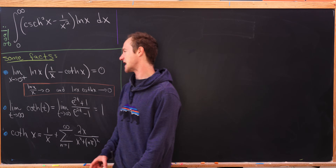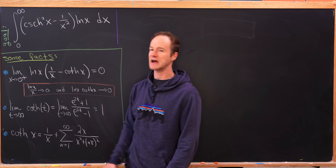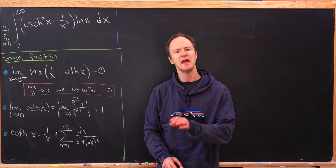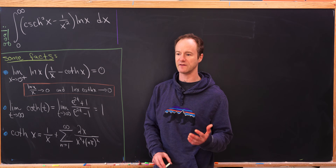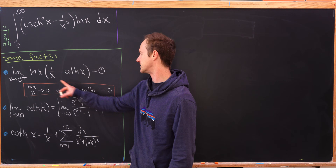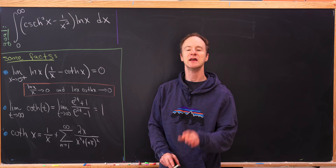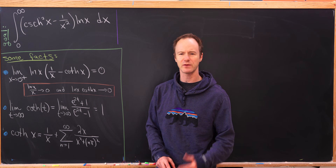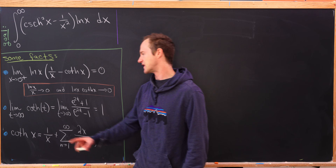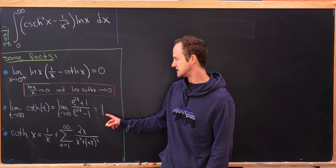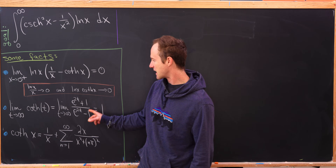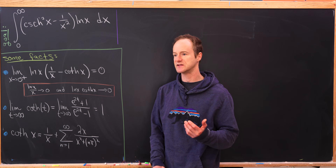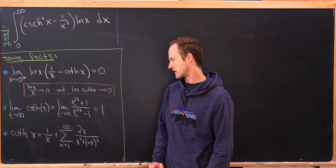First, we'll use the fact that the limit as x goes to 0 from above of the natural log of x times 1 over x minus the hyperbolic cotangent of x is equal to 0. This follows fairly easily by looking at the two parts after distributing the natural log through and seeing that each trends towards 0 — you can establish that with L'Hôpital's rule. Next, we'll use the fact that the infinite limit of the hyperbolic cotangent equals 1, which is easy to establish by looking at the exponential version, hyperbolic cosine over hyperbolic sine.